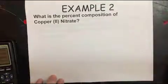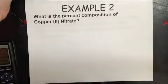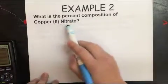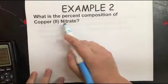So let's try another example. So in this one, I gave you the actual compound and the formula. So this one, I asked for the percent composition again, but I write Copper (II) Nitrate. So just like you have to do every single time,